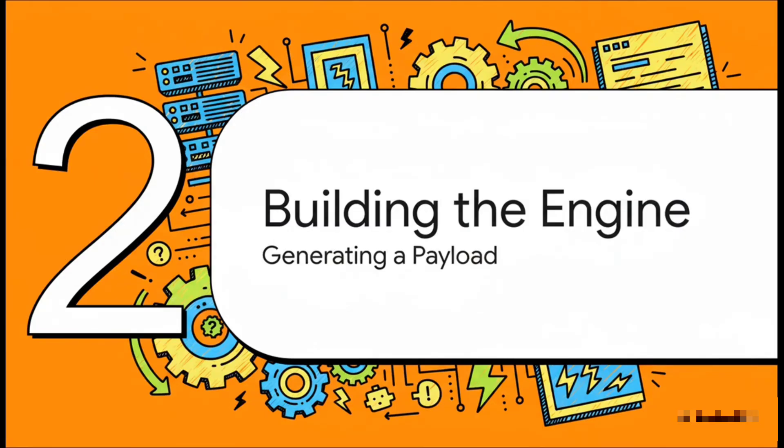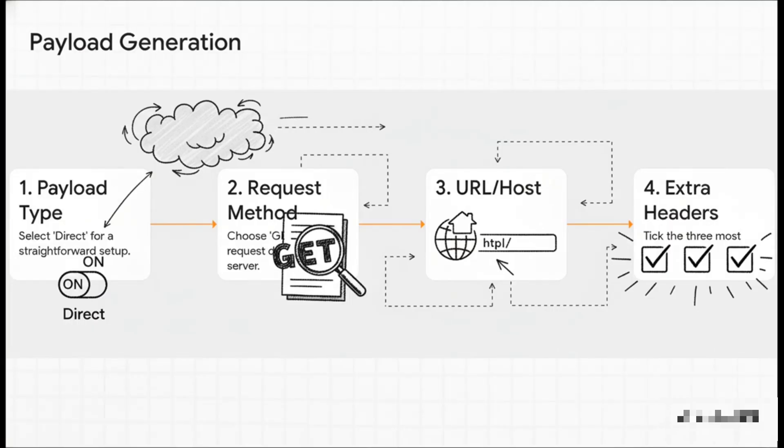Next up, we need to build the engine for our connection. It's called the payload. Don't let that technical name throw you off — it's really just a set of instructions. We're basically just telling the server exactly how we want it to handle our connection request, and making that payload is just a simple four-step process.